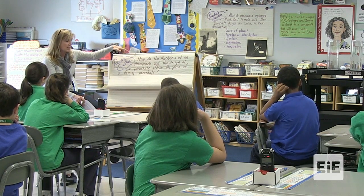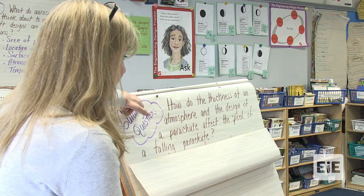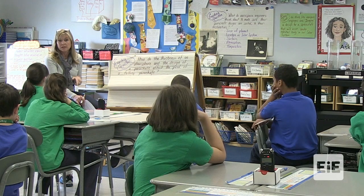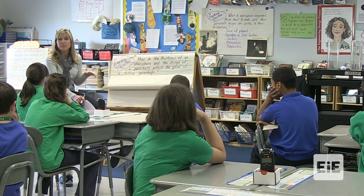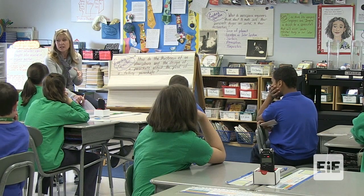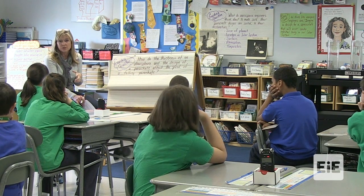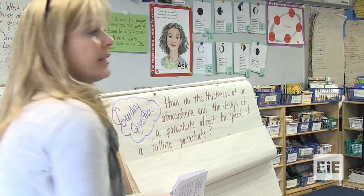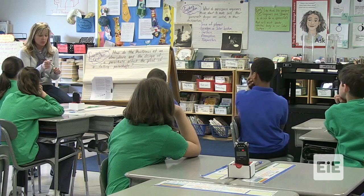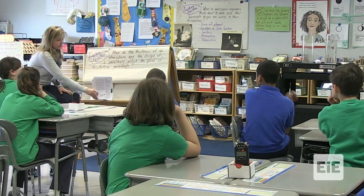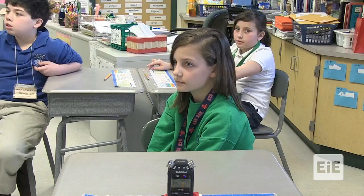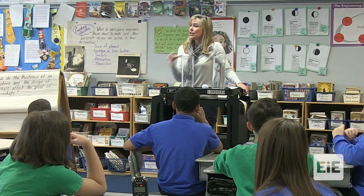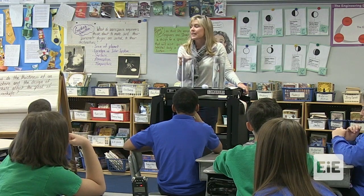The first part: how does the thickness of the atmosphere affect a falling parachute? To model the atmosphere, especially when thinking about the solar system, we use two containers here. We try to test things with a model.